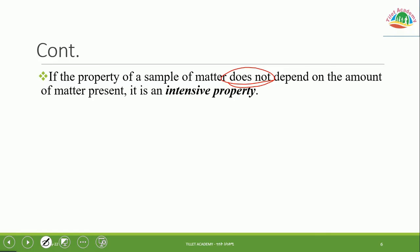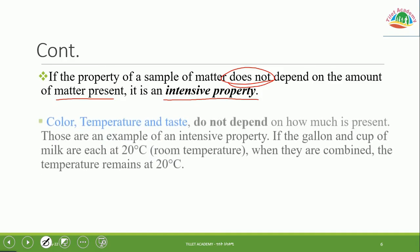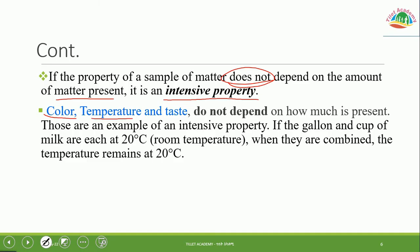Properties that do not depend on the amount of matter are called intensive properties. Color, temperature, and taste do not depend on how much is present. Those are examples of intensive properties. If a gallon and a cup of milk are each at 20°C, when they are combined, the temperature remains at 20°C.